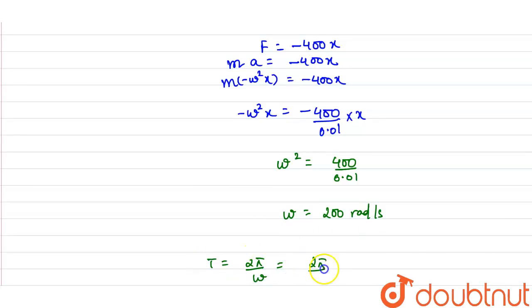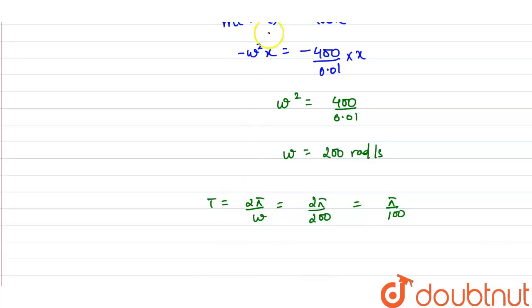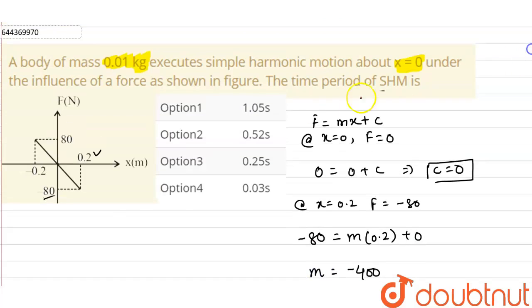So this will be equals to 2 pi by 200 or pi upon 100. So from here the time period T finally comes out as 0.03 seconds.